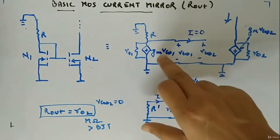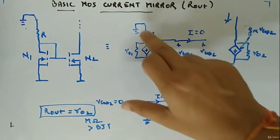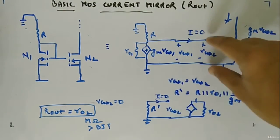You can see the MOSFET side: this is the MOSFET side, RO1, GM VGS1, VGS1. These are connected, R is there, ground ground, then VGS2, GM VGS2, RO2. And from here we have to look for Rout.